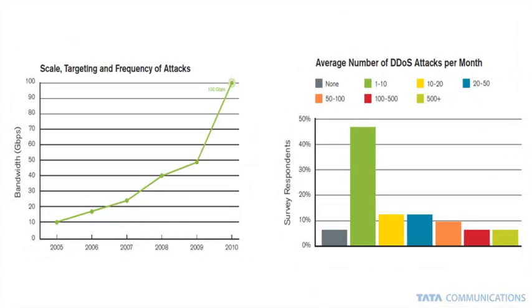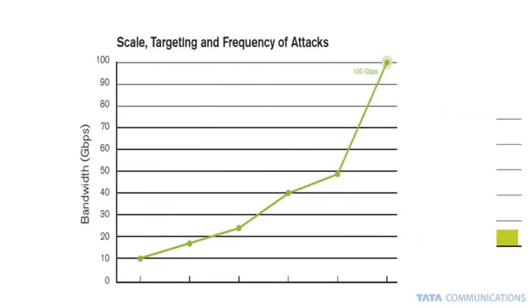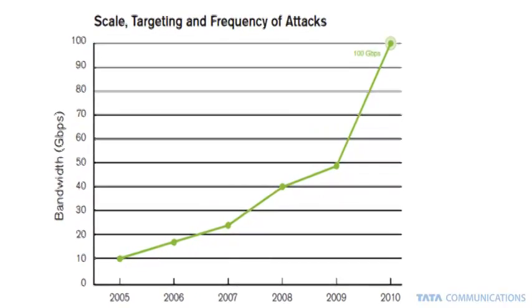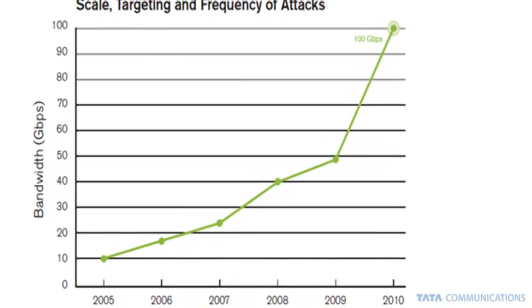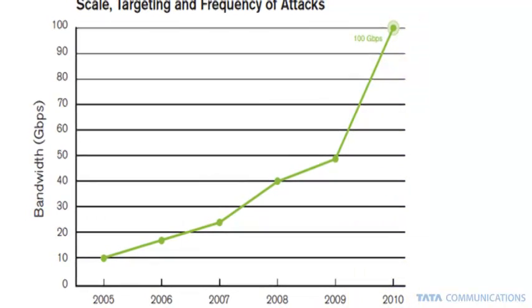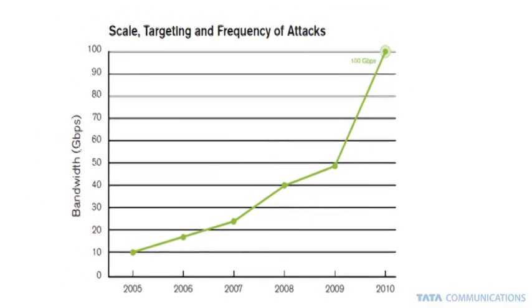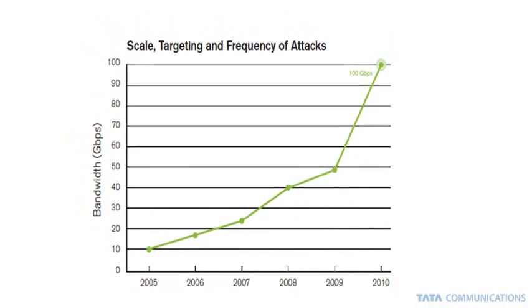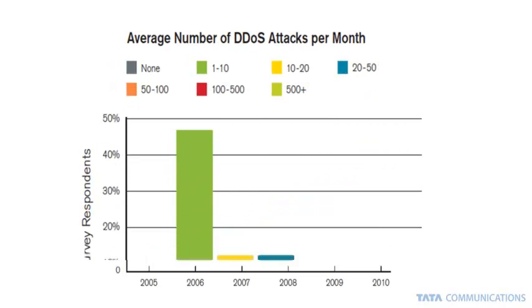DDoS attacks are getting worse, not just in the size of the attack, but in the frequency of which they occur. The two graphs on this slide show us that in the past we would have perhaps a 10 gig attack once a year, whereas the largest attack for 2010 was over 100 gigabits. These attacks have grown significantly in frequency as well — the single 10 gig once-a-year attack has turned into multiple 10 gig attacks, perhaps in a given month for some customers.